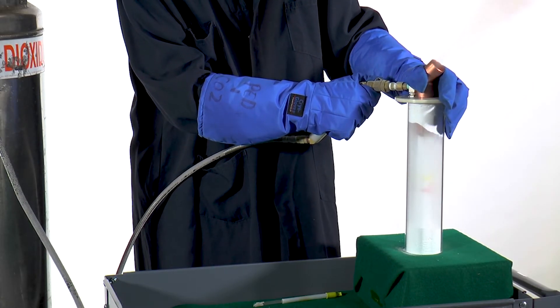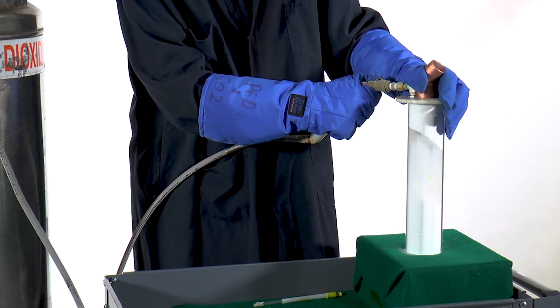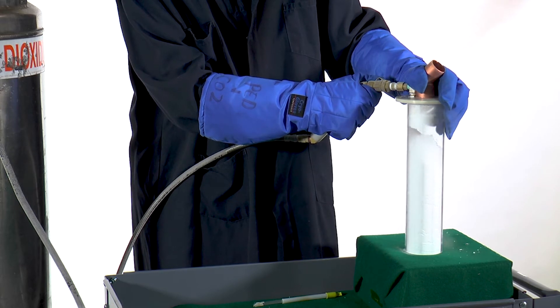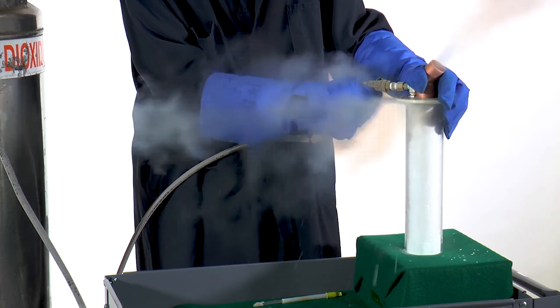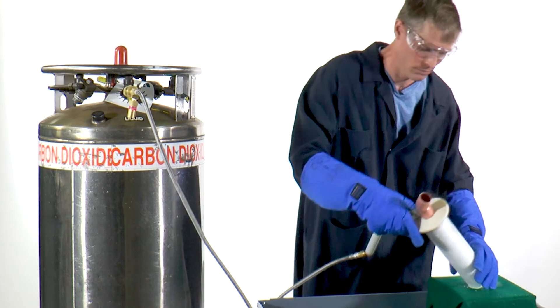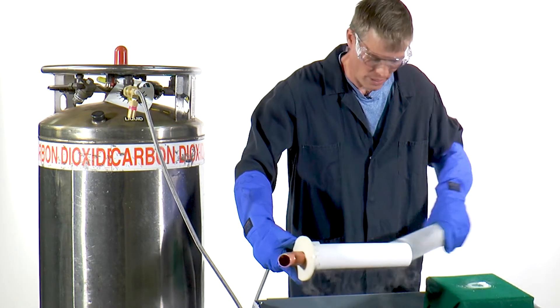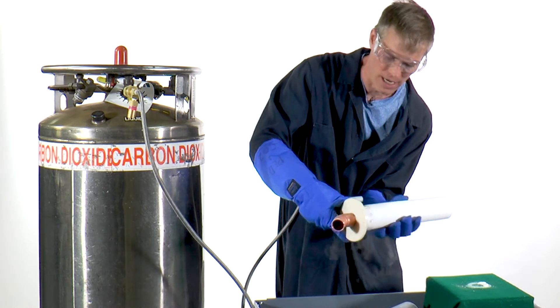The liquid from this tank flows through the tube to the handpiece and flashes into dry ice. Once the container is full, you have a block of dry ice.